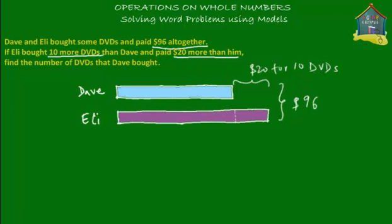Now, what do we have from here? We have that the blue bar and the purple bar are equal to $96 altogether, and the difference between them is $20, and that's for 10 DVDs. The blue bar is the question mark — that's what we have to find. Let's handle this first: Ellie spent $20 more than Dave and bought 10 DVDs more than Dave. That tells you that 10 DVDs cost $20.